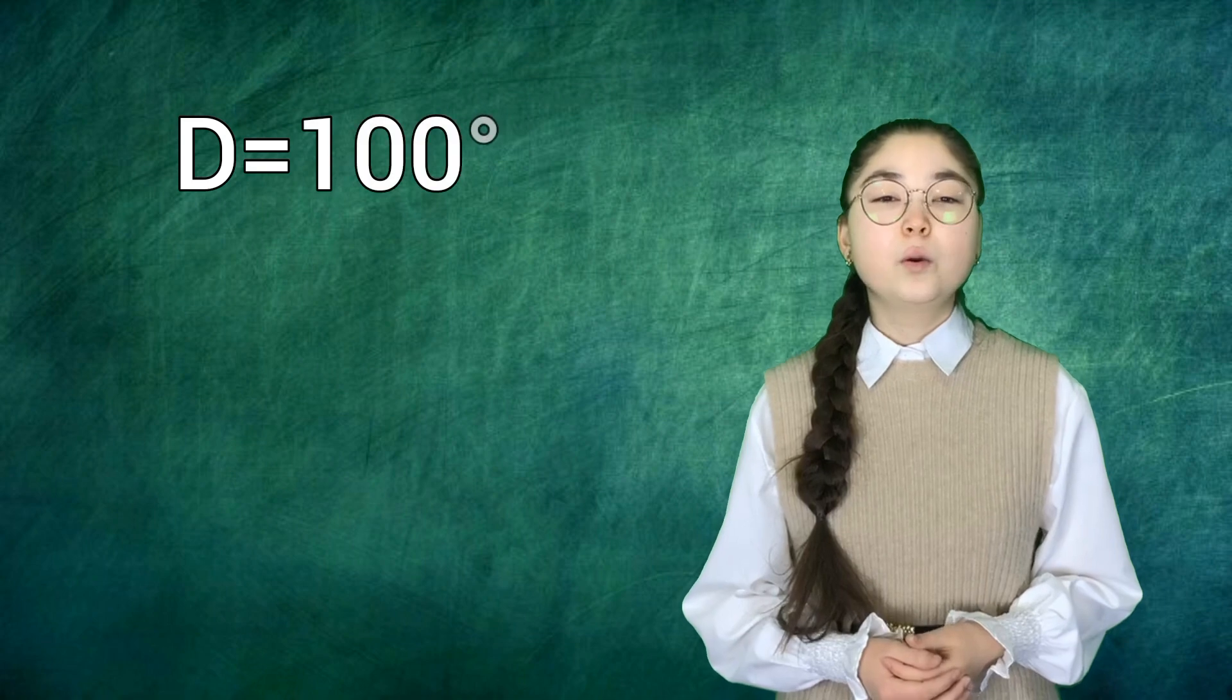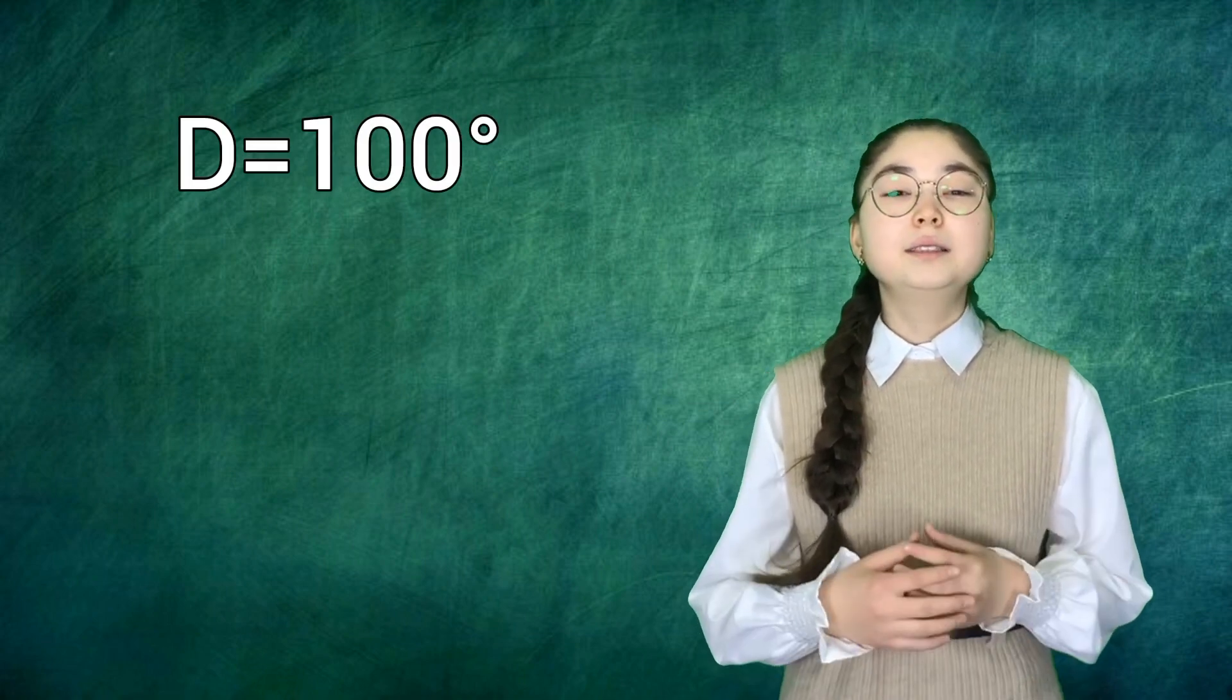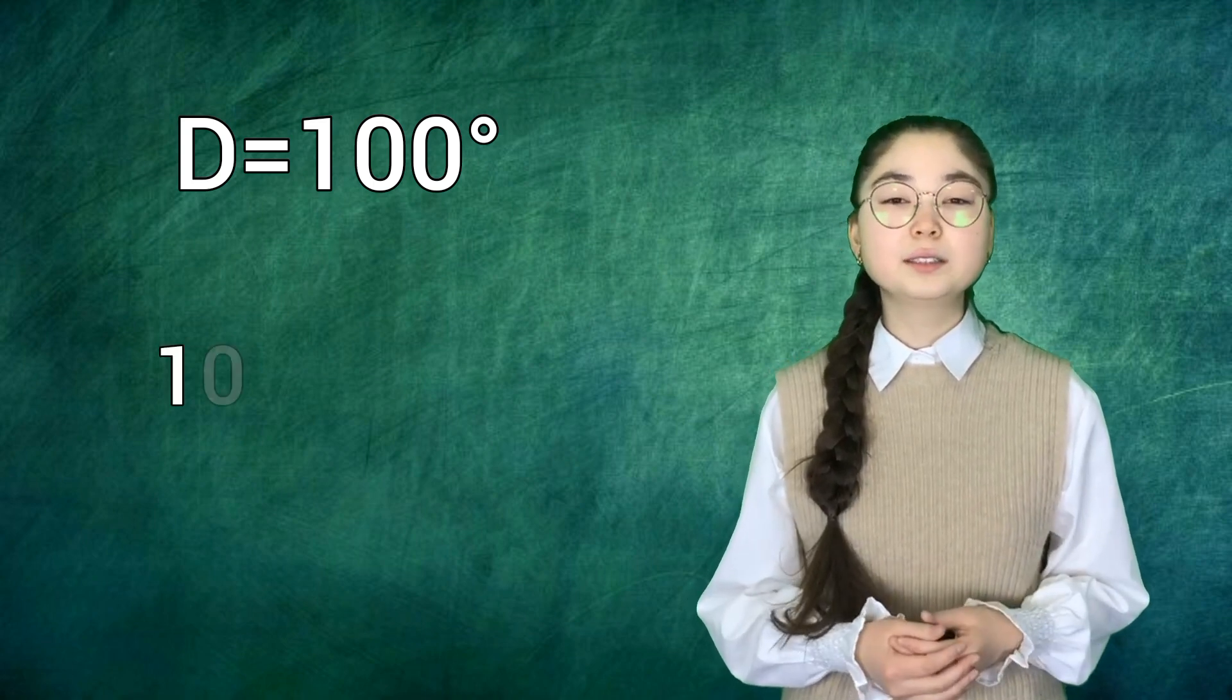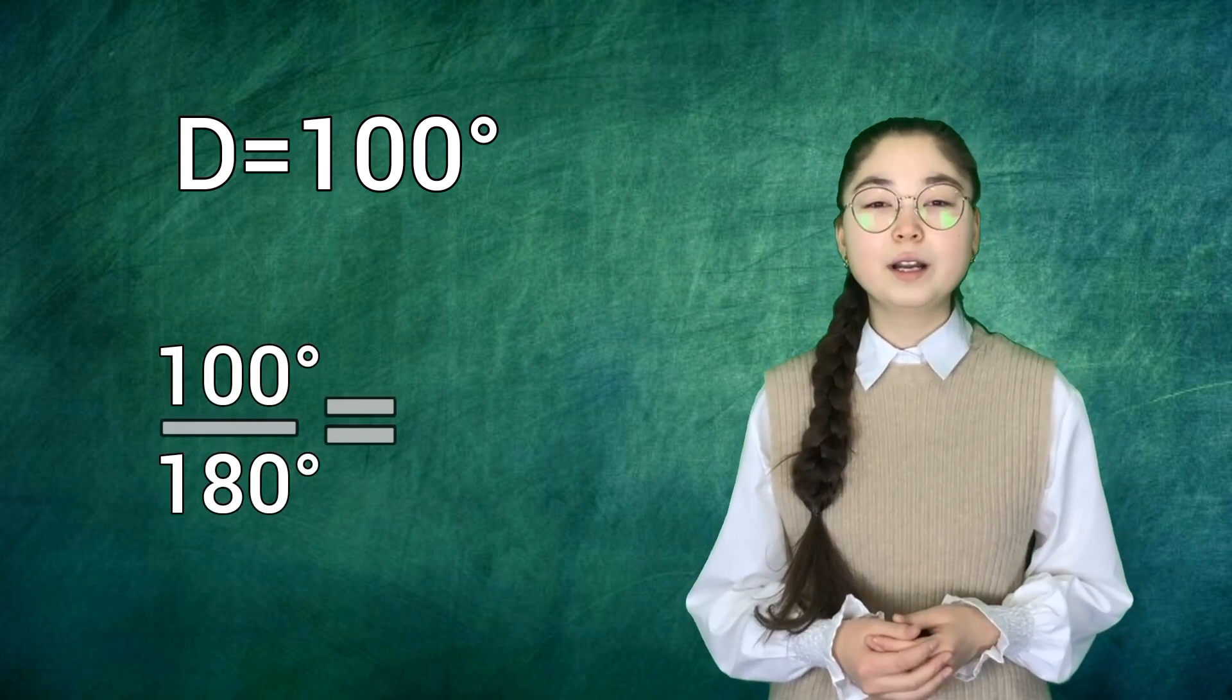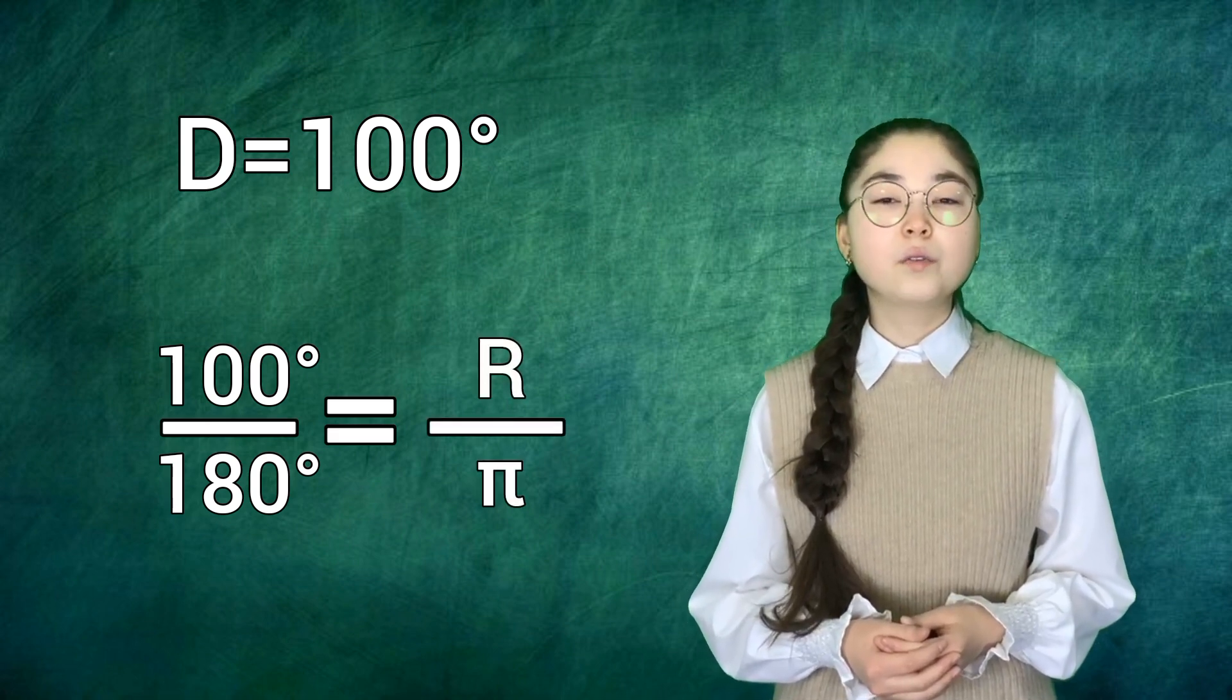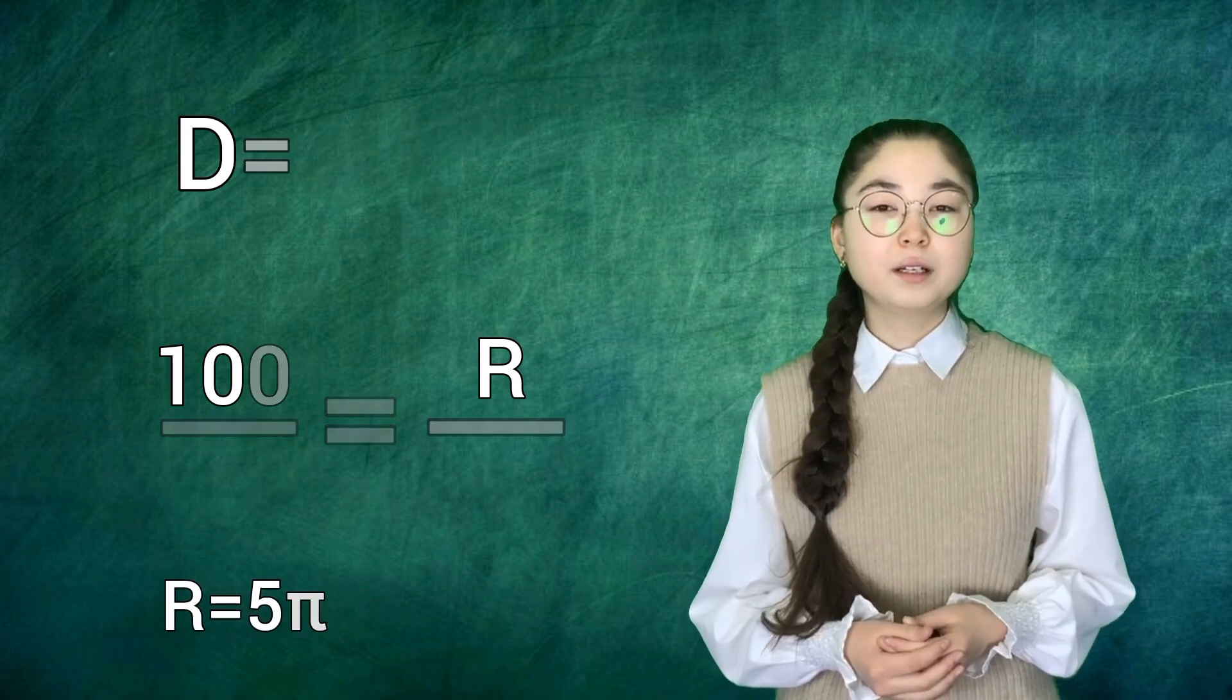Let's consider examples. Convert 100 degrees to radians. For d equals 100 degrees, the formula gives us 100 degrees over 180 degrees equals r over π. So r equals 5π over 9.